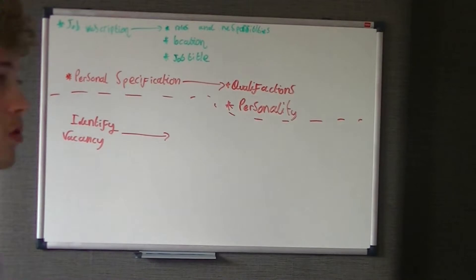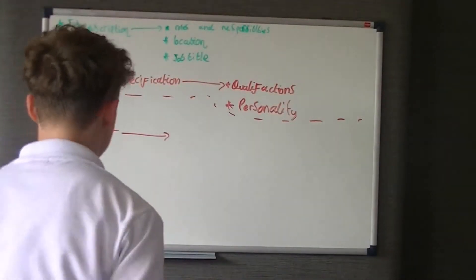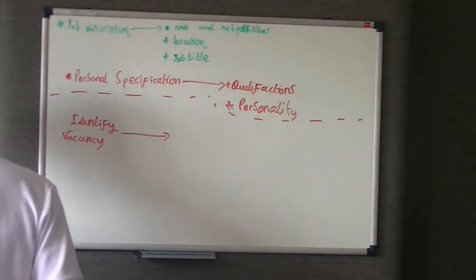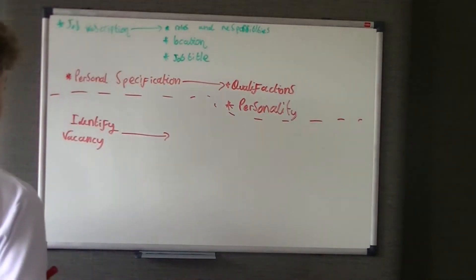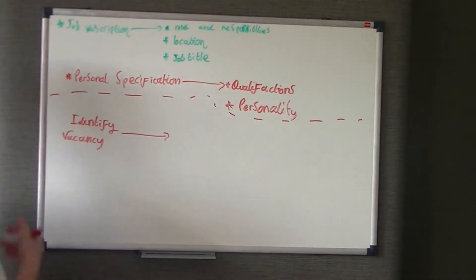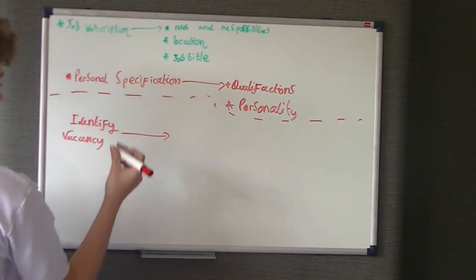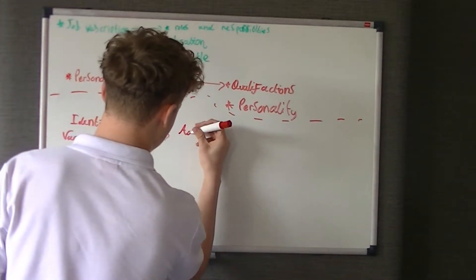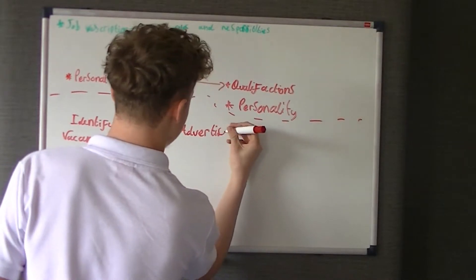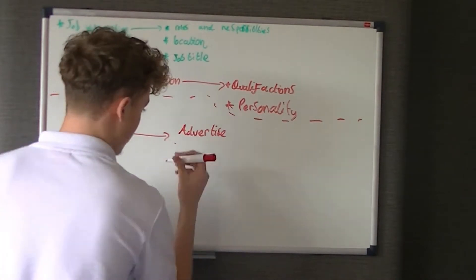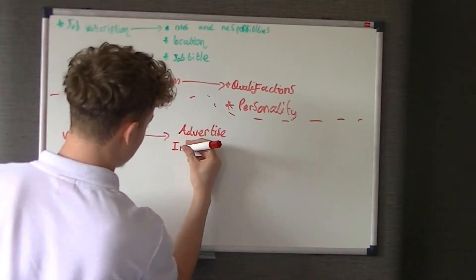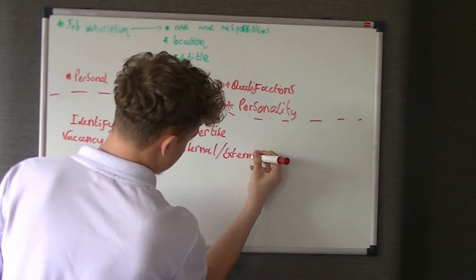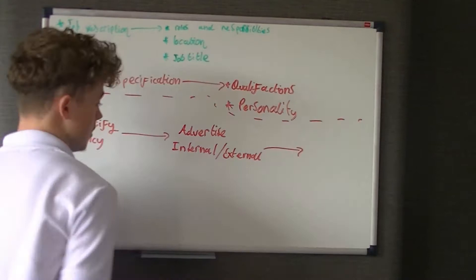If someone leaves, they go - well, do we actually need that space anymore? That's why they have to identify it. It might not be immediately filling the same job as the person who left, because the business might change and they might not really need that job. They might need something different if the business has evolved and grown. So they identify the vacancy, and when they've identified it - what they need, what person they're looking for - they need to advertise it. They can advertise internally or externally, depending on whatever the business prefers.